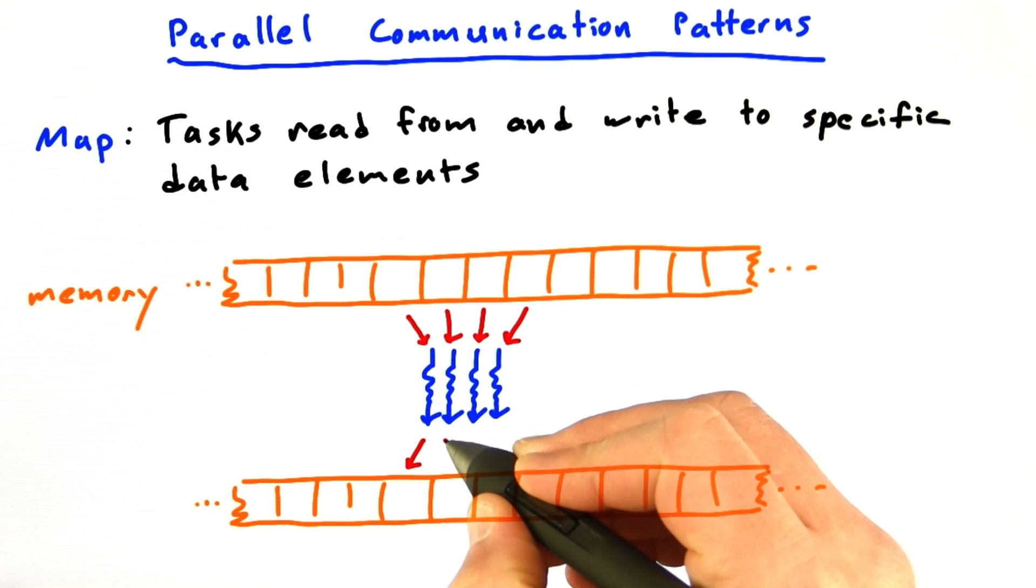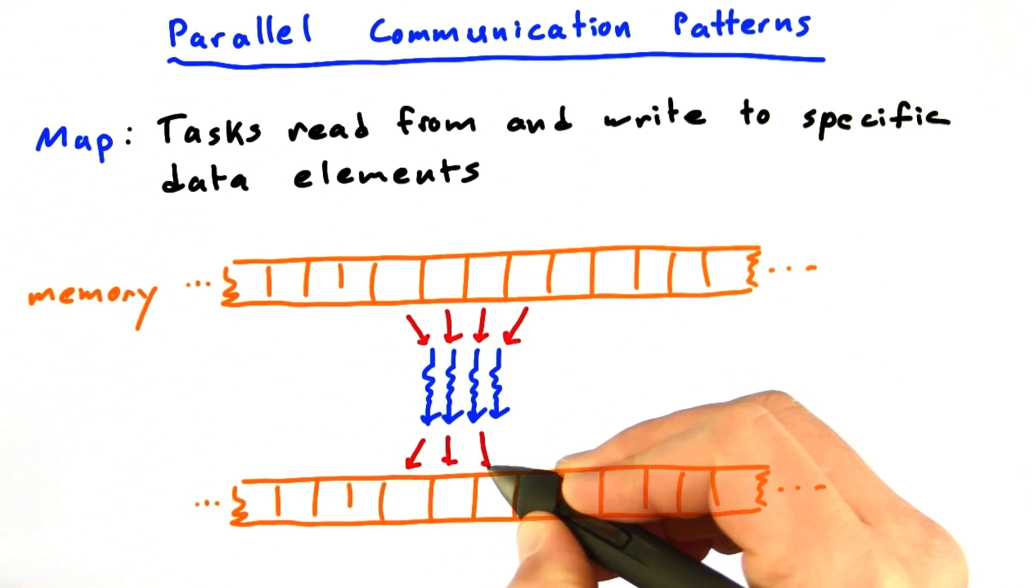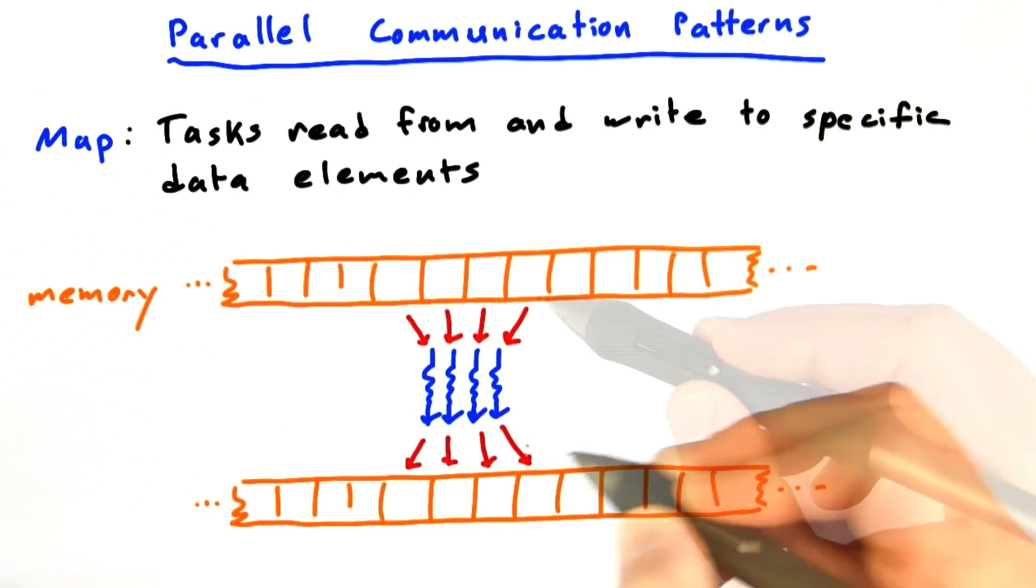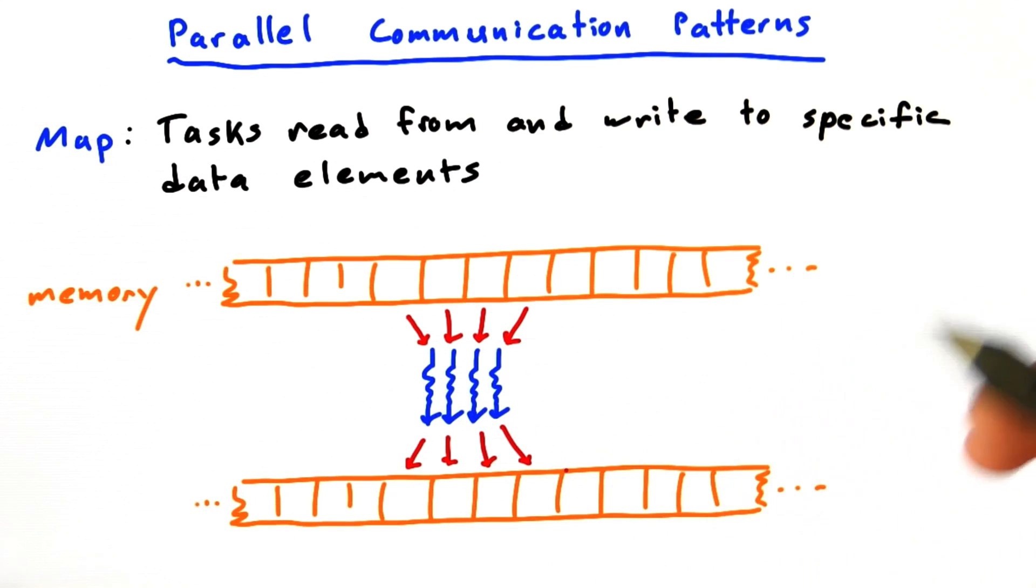This means each task is going to read from and write to a specific place in memory. There's a one-to-one correspondence between input and output. Map is very efficient on GPUs and easily expressed in CUDA by simply having one thread do each task. But this isn't a very flexible framework. There's many things you can't do with a simple map operation.